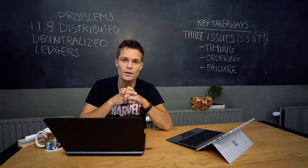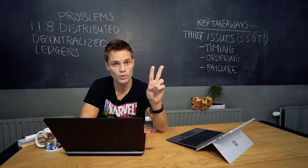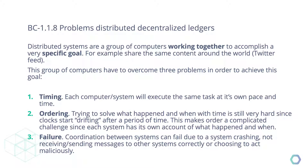The three main problems with distributing and decentralizing a ledger are timing, ordering, and failure. A ledger's goal is to represent the world as best as possible by recording transactions — to mimic the real world. To do that, things need to be set in a timely manner and represent the world as best as possible, as seen in the perfect ledger.